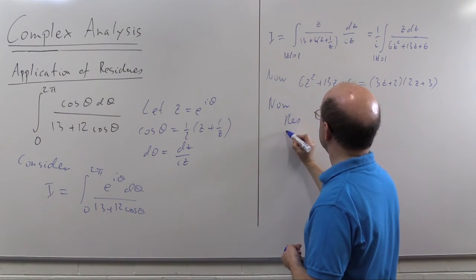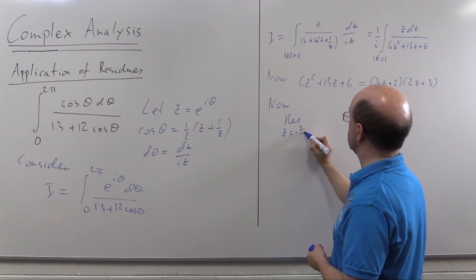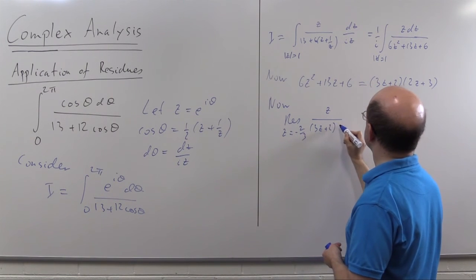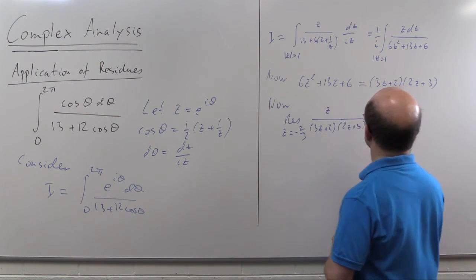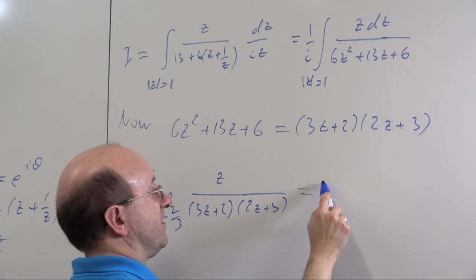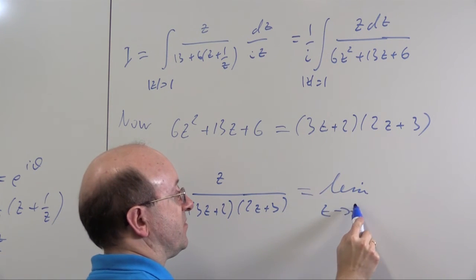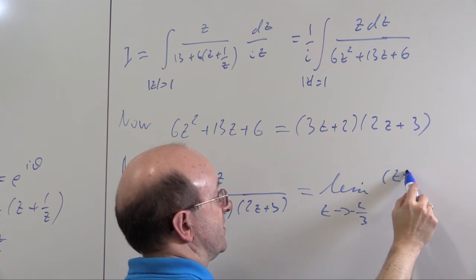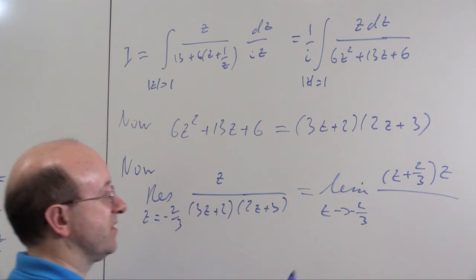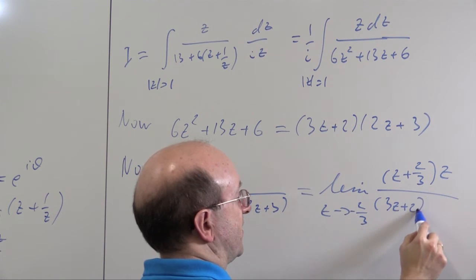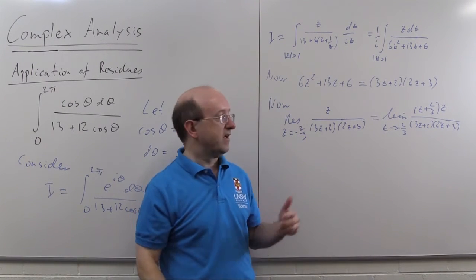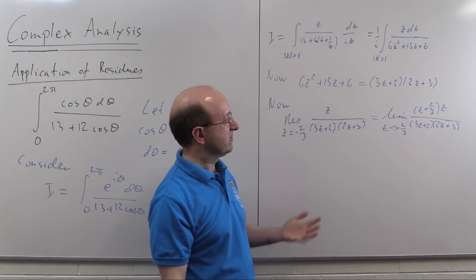So we say the residue at z is, and what was my point again, minus 2 thirds of my integrand, which I might as well write down factorised, is by definition the limit as it approaches minus 2 thirds of z plus 2 thirds z, that's z minus minus 2 thirds but of course 3 z plus 2 into 2 z plus 3.